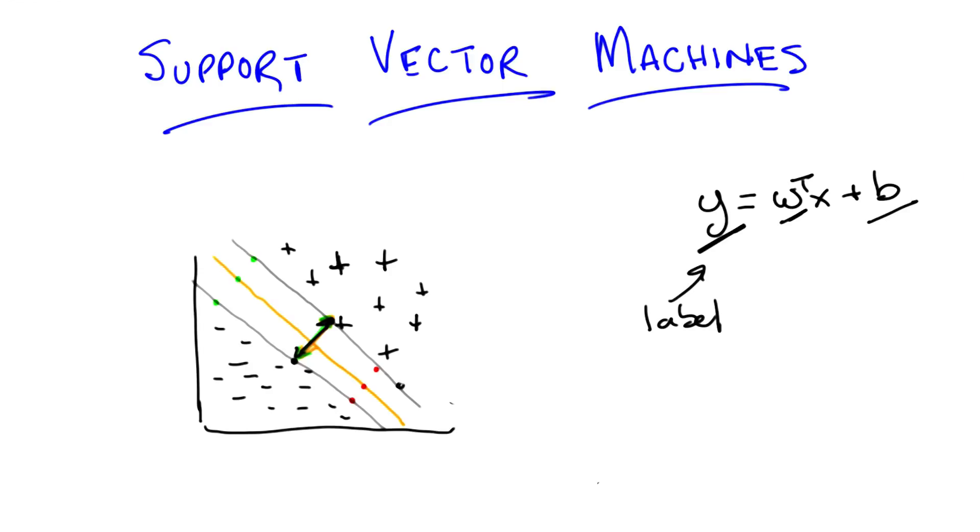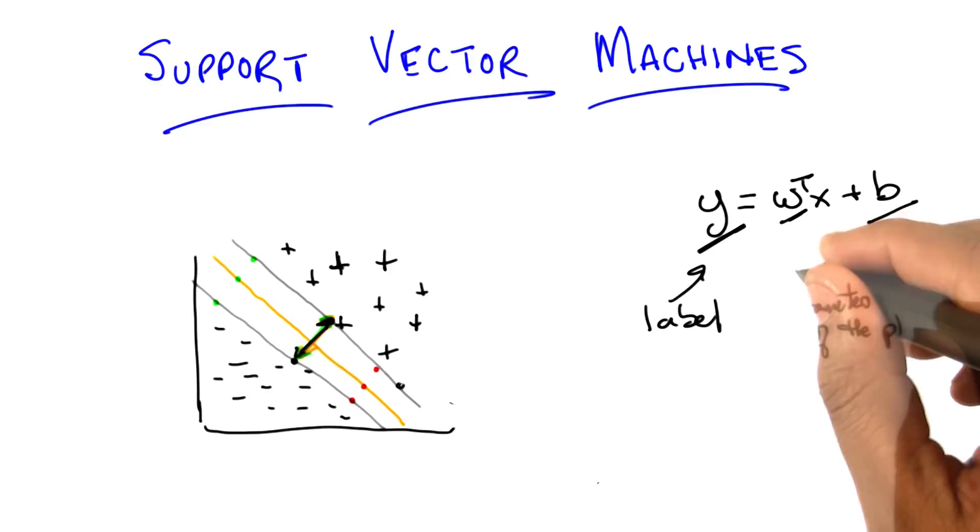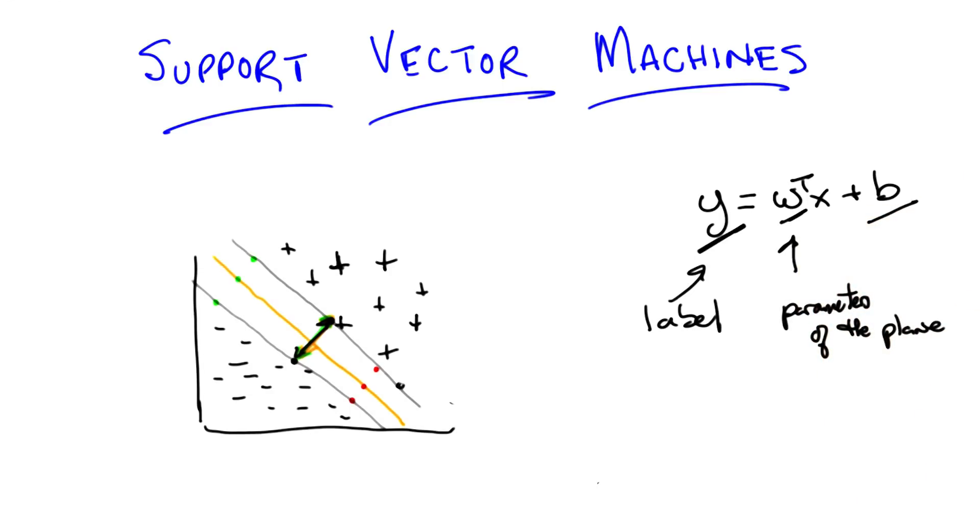W represents, again, the parameters of the plane, along with B, which is what moves it in and out of the origin. So this is now, effectively, what our linear classifiers actually look like, even in multiple dimensions with hyperplanes.